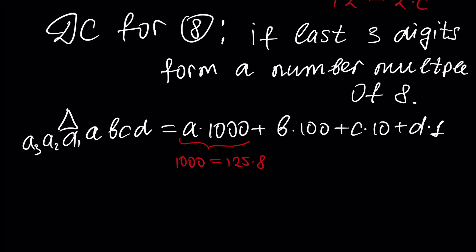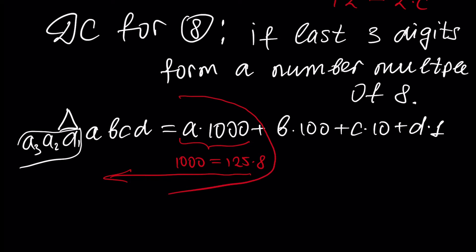If we had a bigger number, we would have additional digits A1, A2, A3, and so on. All of these digits would give us numbers where every element of the representation is divisible by 8. So everything beyond the last three digits is divisible by 8, and if the remaining part is also divisible by 8, then our number is divisible by 8.